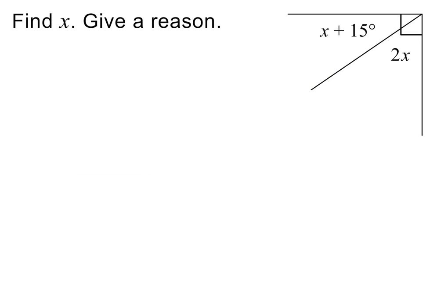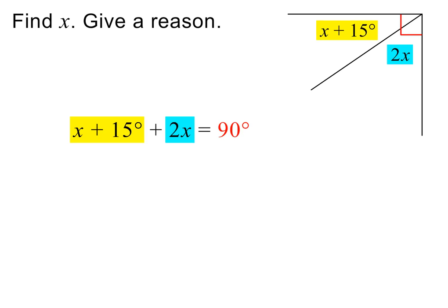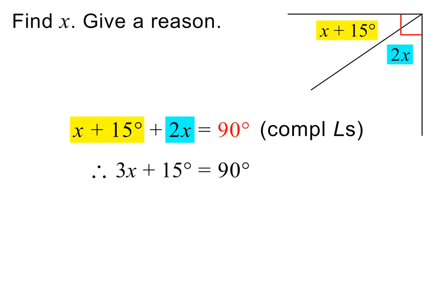Here is a similar question. Please pause and try it on your own first. We can again state that the two given angles add up to 90 degrees, and the reason is they are complementary angles. Next, we add like terms on the left. We then isolate the term with X by subtracting 15 degrees from both sides. And to isolate X, we divide both sides by 3. Please pause to check my working.